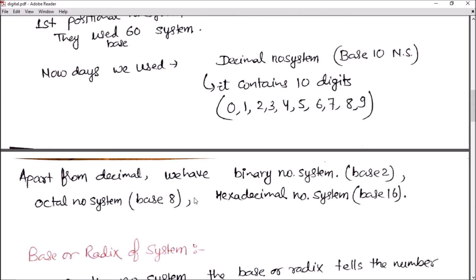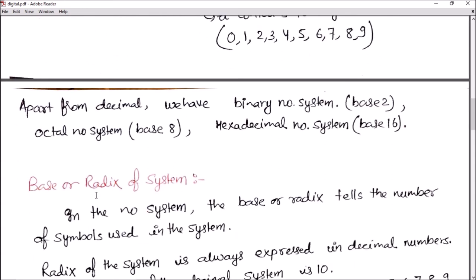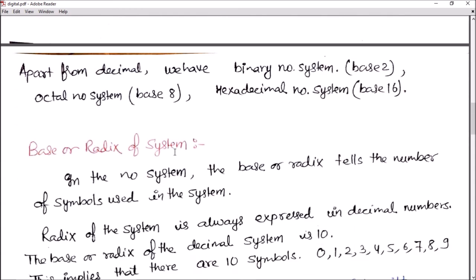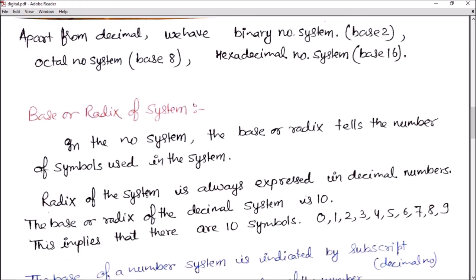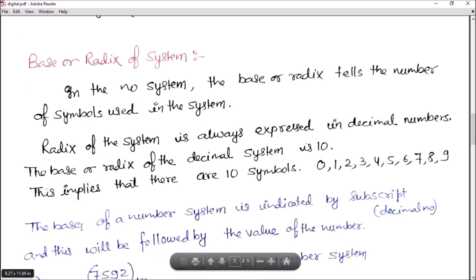Now, what is base and radix of a system? In a number system, the base or radix tells the number of symbols used in the system. That means the base is equal to the number of symbols used. The radix of the system is always expressed in decimal numbers.